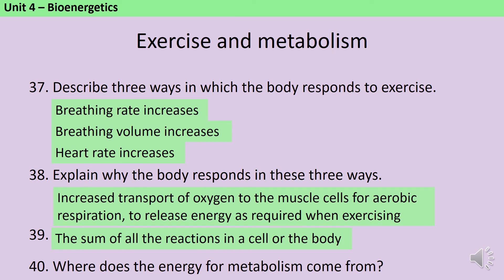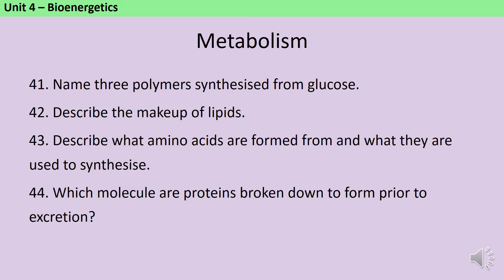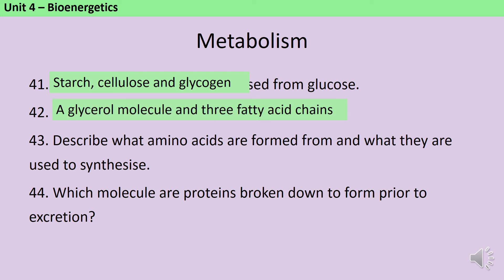Metabolism can be defined as the sum of all of the chemical reactions in a cell or in the body, and the energy for metabolism comes from respiration. The monomer glucose can be polymerised to make starch, a storage polymer found in seeds, tubers, and starch granules within cells. It can also be used to make cellulose for cell walls. In animals, glucose can be stored as glycogen rather than starch. Lipids are made of three fatty acid chains and a molecule called glycerol. Amino acids are formed from glucose together with nitrate ions, and these amino acids can be joined together by peptide bonds to make polypeptides, which are then folded up to make proteins. Prior to excretion, proteins are broken down to make urea.